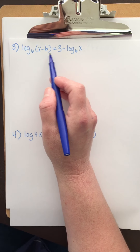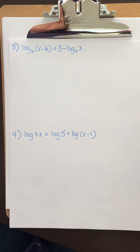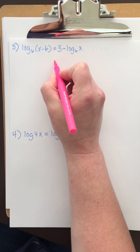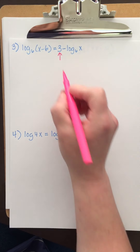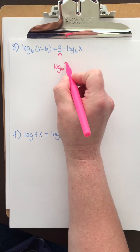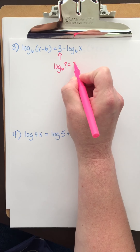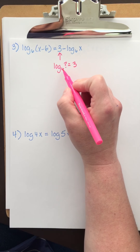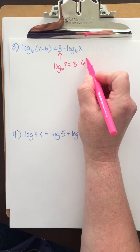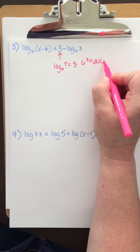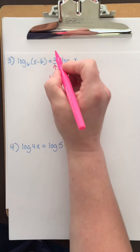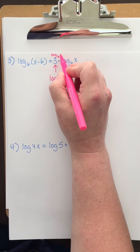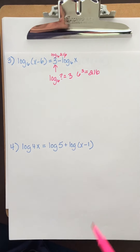For the next one, we have log base six of x minus six equals three minus log base six of x. We need to get rid of that three by expressing it as a logarithm. Log base six of what gives me three? Think about it in exponential form: six to the third power is 216. So for this three, I'm going to use log base six of 216.